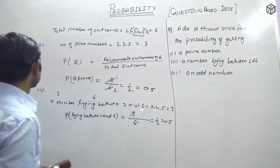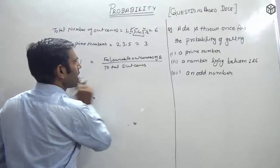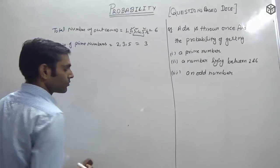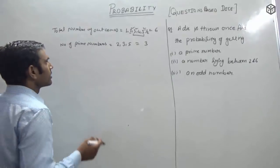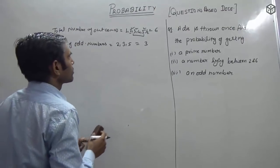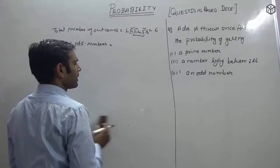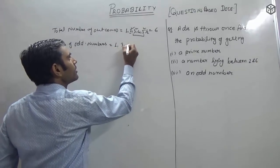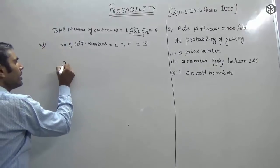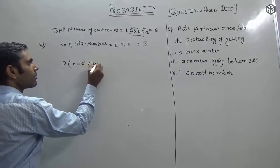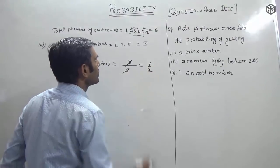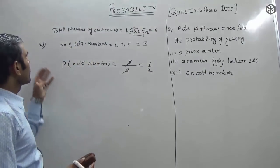Third part: an odd number. An odd number is a number where the unit place has 1, 3, 5, 7, or 9 — or a number not in the table of 2. The odd numbers from 1 to 6 are 1, 3, and 5 — total 3 odd numbers. P(odd number) = 3 favorable upon total 6 = 1/2. Clear friends — that completes the first question.